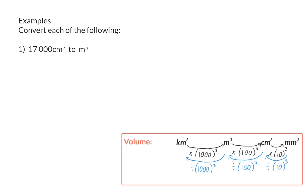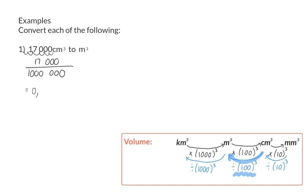Example 1: Convert 17,000 cubic centimeters to cubic meters. For this conversion, we divide by a hundred three times, which means we divide by six zeros, or a million. This means we need to move the decimal point six spaces to the left. We've moved it five already, so we add a zero to move it a sixth time, giving us 0.017 meters cubed.